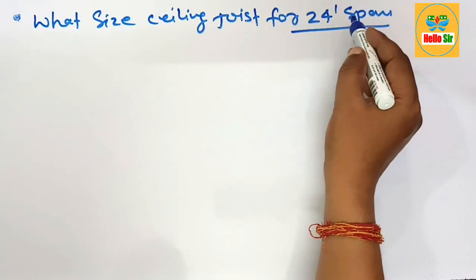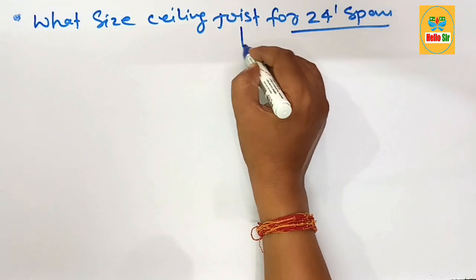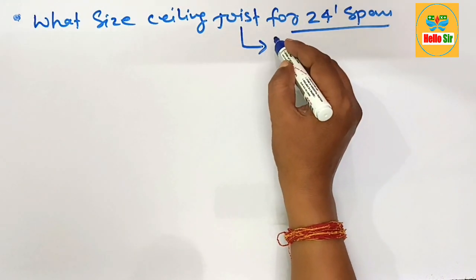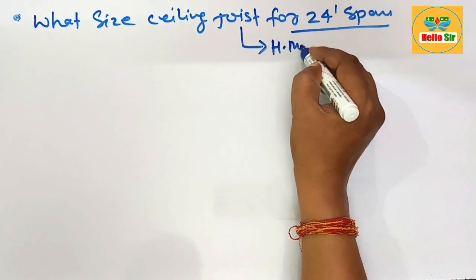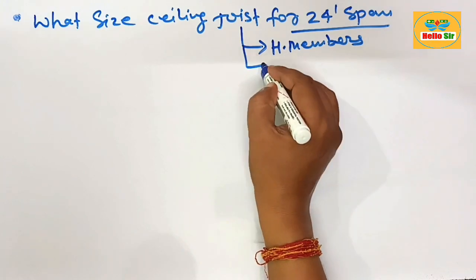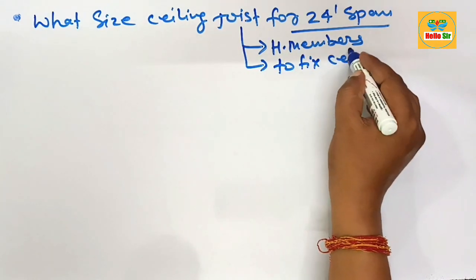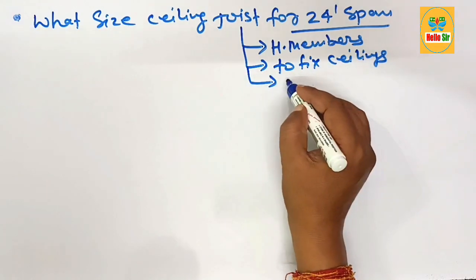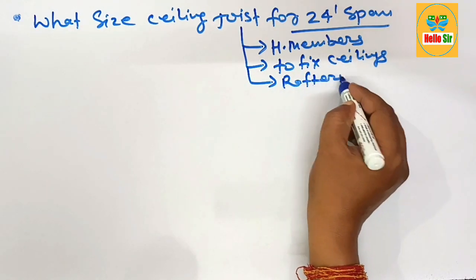First, understand about the ceiling joist. In a roof framing system, it is a horizontal member that provides structure to fix the ceiling, and it provides support to roof rafters and the ridge beam.